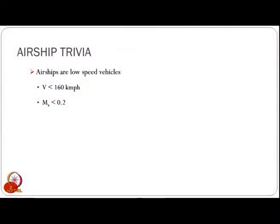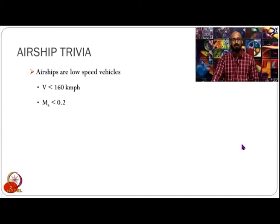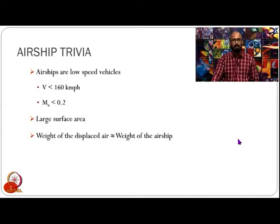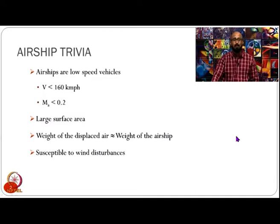Let us look at a few obvious facts that we already know about airships. We know that they are low speed vehicles — they operate at less than 160 kilometers per hour, which corresponds to a Mach range of about 0.2. They also have large surface area and we know that they are buoyant vehicles. Therefore, the weight of the displaced air is nearly equal to the weight of the airship, so the net resultant weight of the airship is approximately zero. They are also susceptible to wind disturbances — very sensitive to wind and weather conditions.